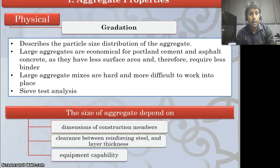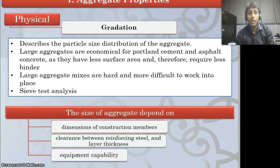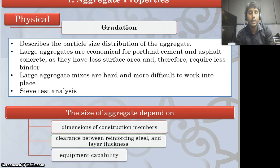The next aggregate property is gradation. Gradation means grading the soil — it describes the particle size distribution of the aggregate, showing how different sizes of particles are distributed in a sample. Large aggregates are economical for Portland cement and asphalt concrete as they have less surface area and therefore require less binder. However, large aggregate mixes are hard and more difficult to work into place due to their heavy weight.